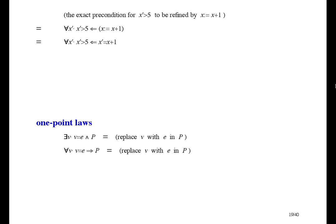Now, do you remember we used a one-point law for an existential quantification? Well, there's a similar law for universal quantification. Except that for exists, it's a conjunction, and for all, it's an implication.